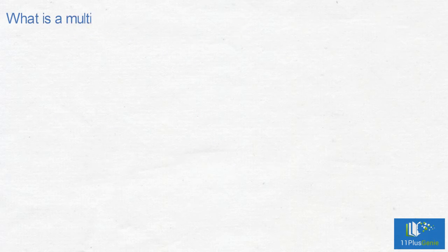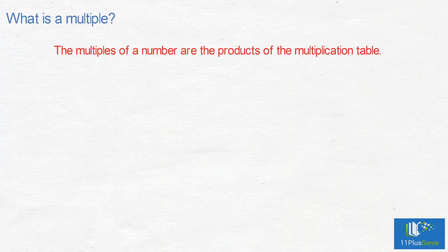What is a multiple? The multiples of a number are the products of the multiplication table. The multiples of 5 are 5, 10, 15, 20, etc.